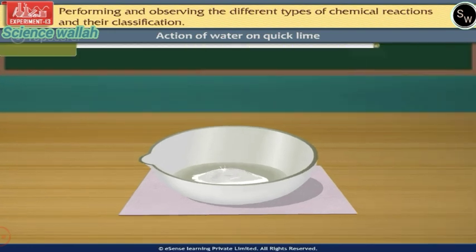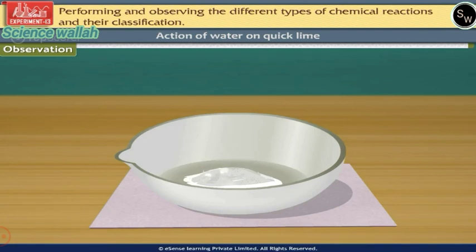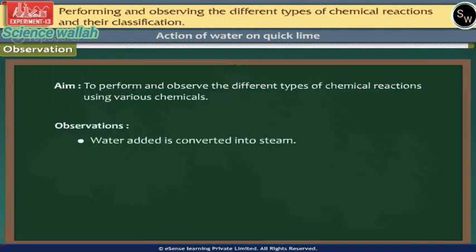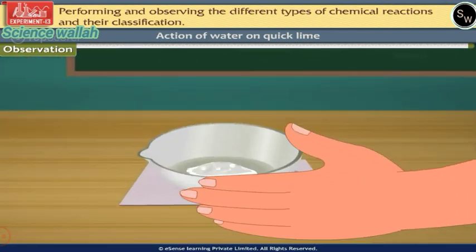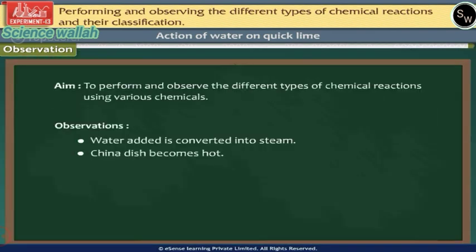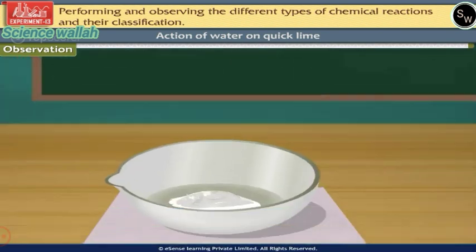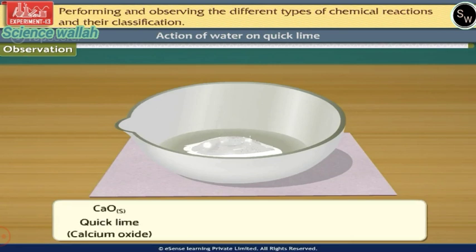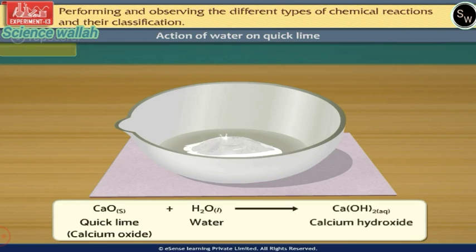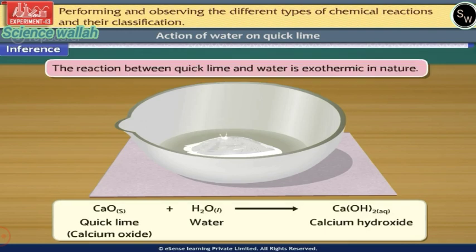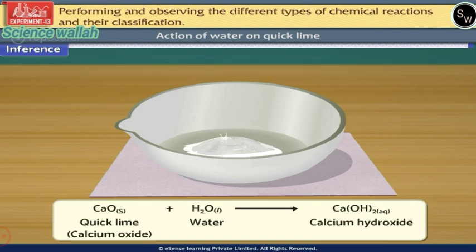What do you observe? Water added to quick lime is converted into steam. Carefully touch the china dish — it has become hot. There is also a hissing sound produced. Quick lime (calcium oxide) reacts with water to form calcium hydroxide. The reaction is exothermic in nature, and this is an example of a combination reaction.